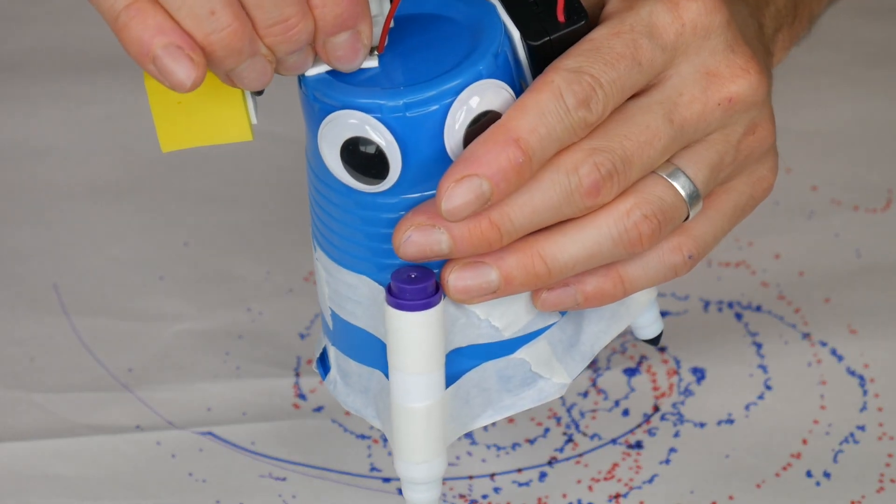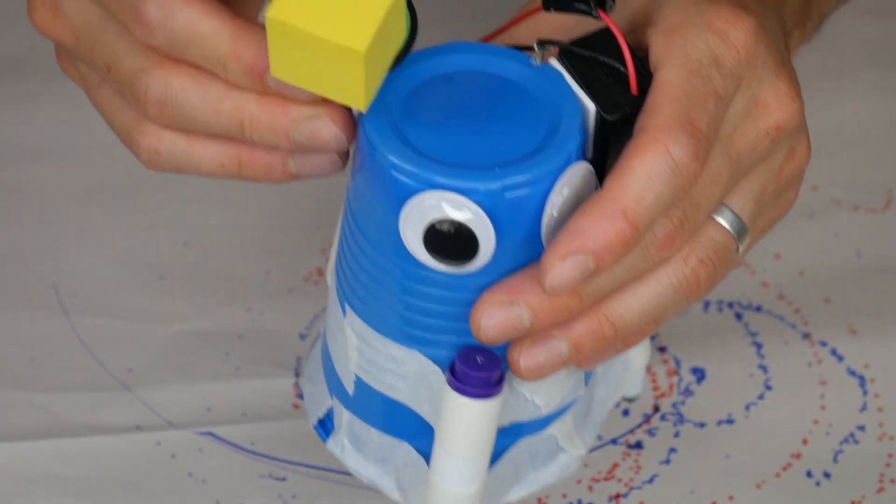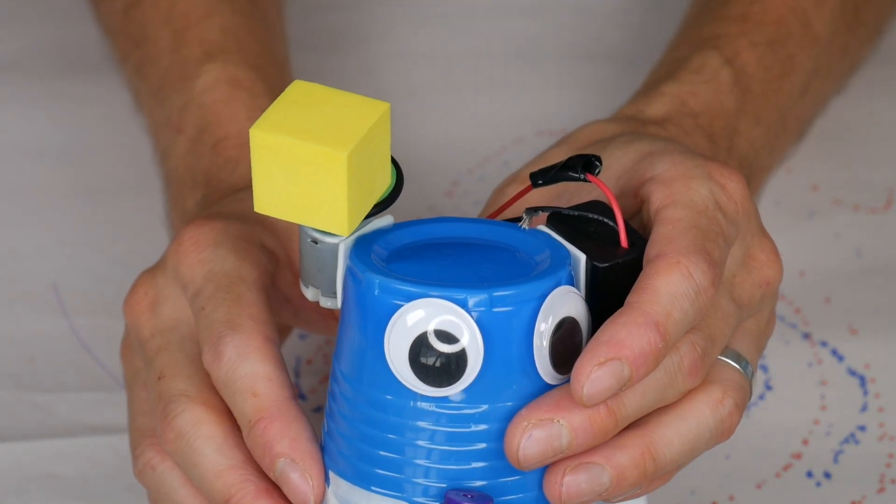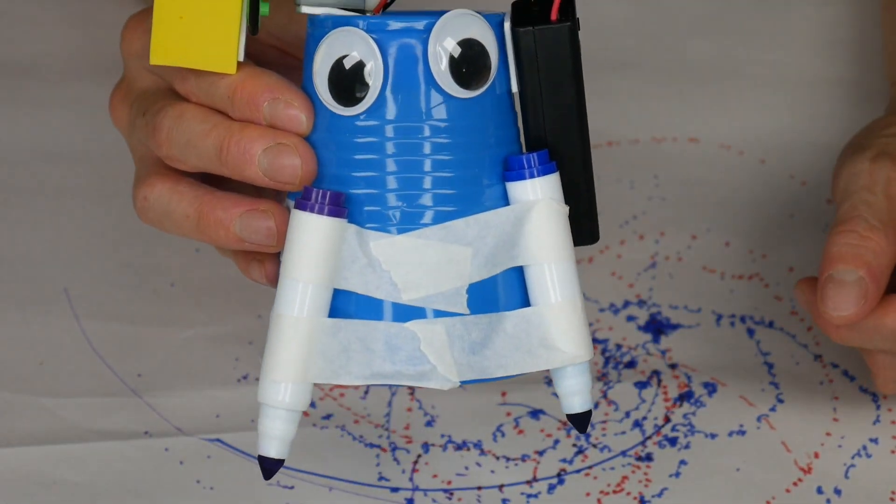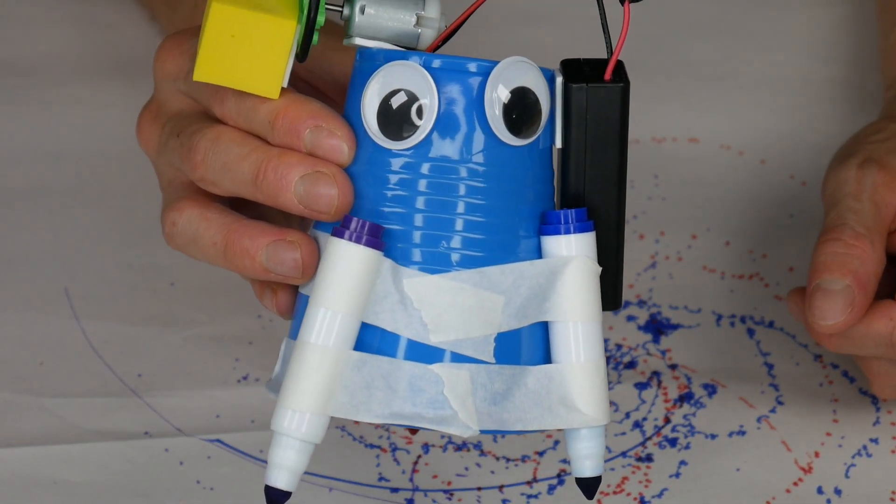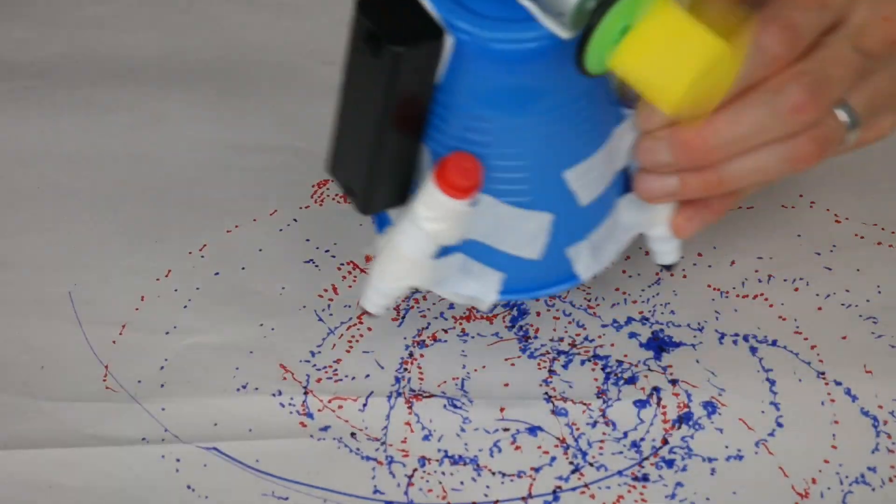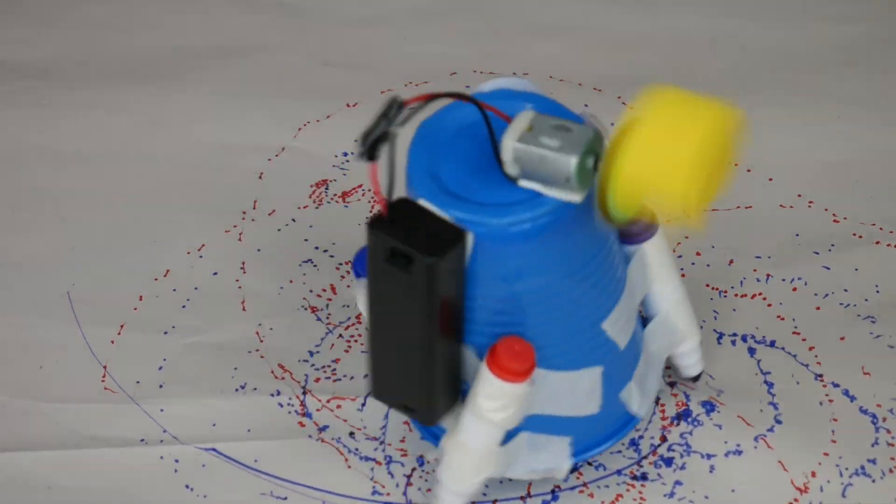And by moving the motor, for example, from the top of the robot to the side, it changes the direction that the vibrational forces are occurring. And finally, the markers. The position of the markers affects the stability of the robot and the direction that it goes in. For example, if we angle all the markers slightly in one direction, now the robot spins in a circle. It's really fun to experiment and see how the patterns change.